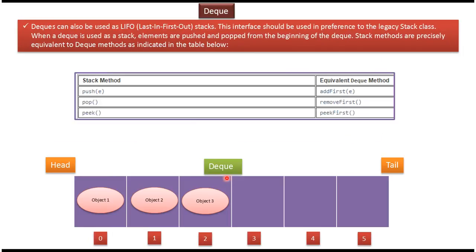We can also use Dequeue as a stack, meaning we can achieve last-in-first-out behavior using Dequeue. When using Dequeue as a stack, we push elements at the beginning and remove elements from the beginning. The corresponding Dequeue methods for stack methods are: push → addFirst, pop → removeFirst, peek → peekFirst.